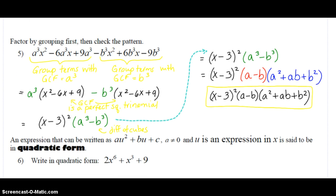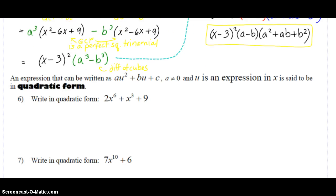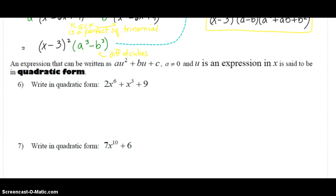If you're ready to go on, we're going to take a look at something called quadratic form. It's similar to what we did in chapter five, but a little bit different because it's not really a quadratic, but we're going to treat it as a quadratic. We're going to put it in quadratic form to make it easier to factor. Our notes say an expression that can be written as a times u squared plus b times u plus c, where a, the leading coefficient, is not equal to zero, and u is an expression in x — this is said to be in quadratic form.